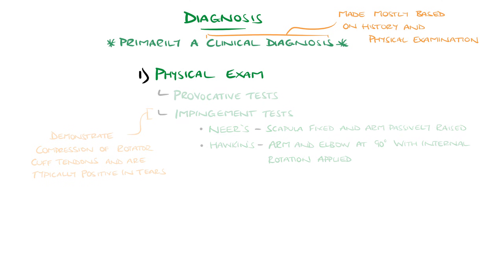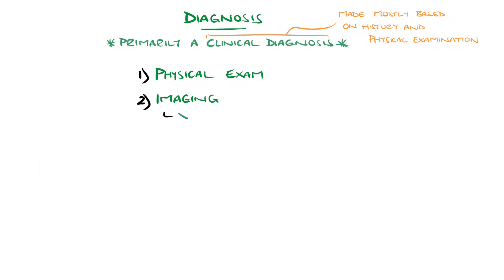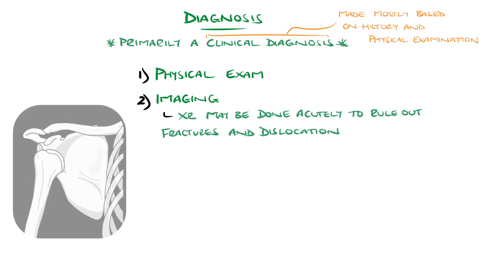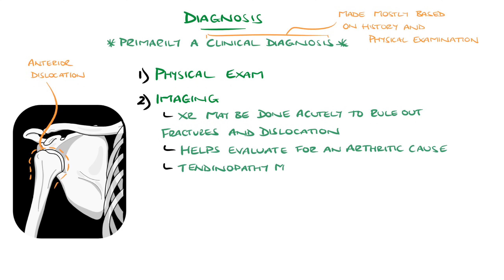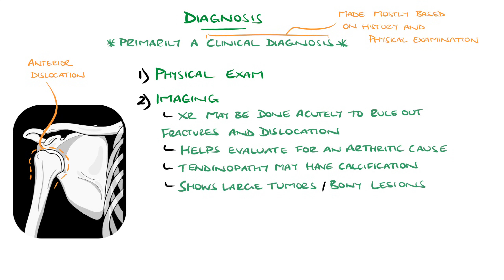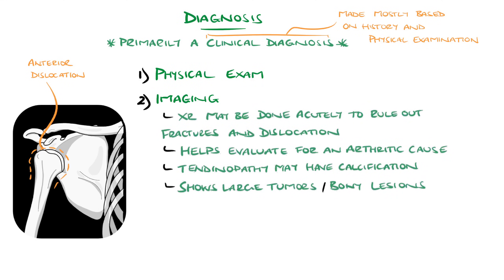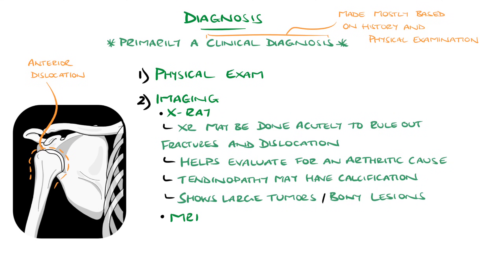Imaging is done in some instances — for example, X-ray initially to rule out a fracture or even dislocation, especially in acute settings, as well as to evaluate for arthritic changes in longer standing cases. Calcifications can be seen in some cases of tendinopathy. It can also help evaluate for tumours; for example, a Pancoast tumour may present with shoulder pain. Ultrasound or MRI are modalities used in more advanced cases where a tear is suspected, or particularly as part of preoperative planning.